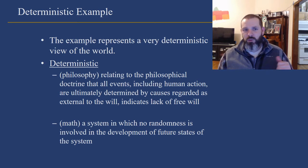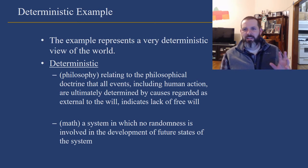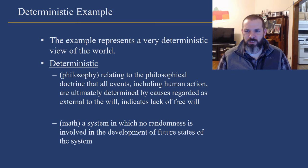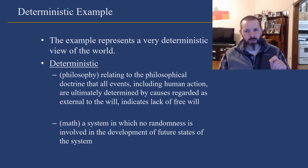Again, this example represents a very deterministic view of the world. There are two ways to look at deterministic, but they're both related. If I look at it in terms of philosophy, it is relating to the philosophical doctrine that all events, including human actions, are ultimately determined by causes regarded as external to the will, and it indicates a lack of free will. So your life goes how it's going to go, and it has completely to do with externality, and your choices have no impact on your life. We're talking about it more mathematically, and in math it's a system in which no randomness is involved in the development of future states of the system. It's saying that it takes four apples to make one pie, it will always take four apples to make one pie, and there is nothing that can change it.